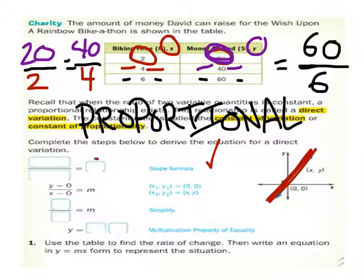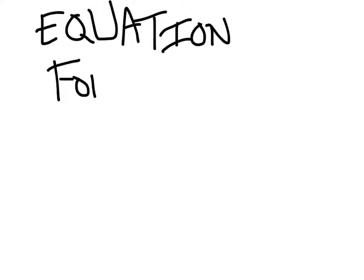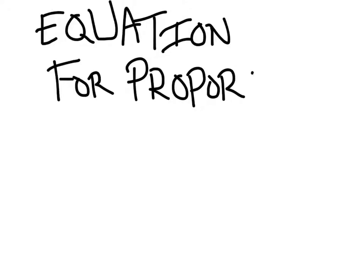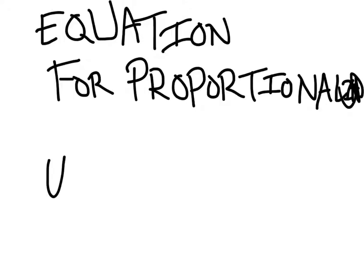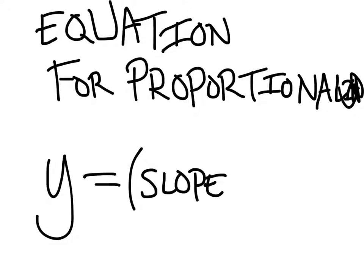Also, this is just a bunch of garbage here. If you guys are writing an equation for proportion, you need to know the equation for proportionality is y equals whatever you find the slope to be, times x. Done. That's it.